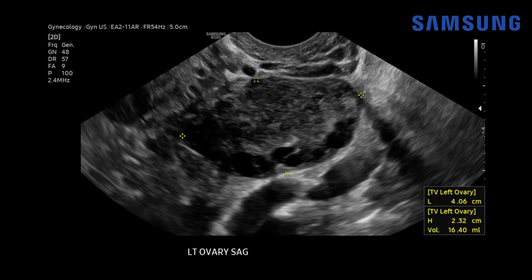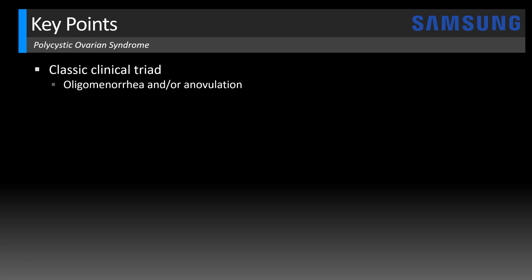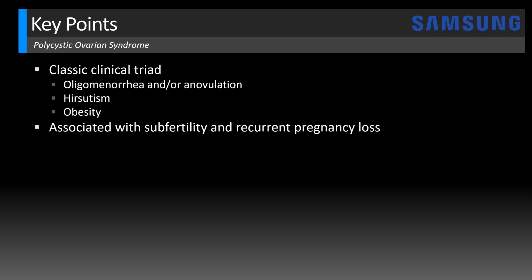10 cc's or more is typical for polycystic ovarian syndrome. These patients tend to present with a classic clinical triad of oligomenorrhea, which is irregular or inconsistent menses, or anovulation, which is lack of ovulation, hirsutism, which is growth of dark or coarse hair in a male-like pattern often on the face, chest, and back, and then obesity. These patients often have an association with subfertility and recurrent pregnancy loss.